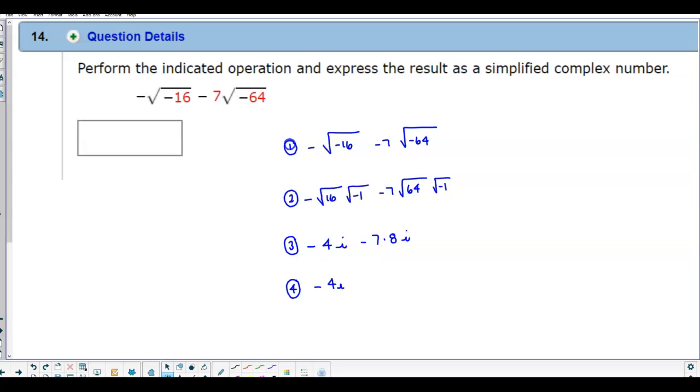So we have negative 4i minus 56i, because 7 times 8 is 56. Combine like terms, we get negative 60i.